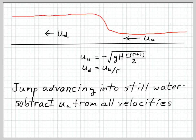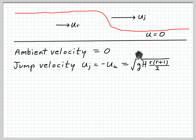If we imagine that our jump is advancing into still water, then all we have to do to make the required Galilean transform is subtract the upstream velocity from the entire flow. That requires adding root GH r times r plus 1 over 2 to all velocities. The result is that the upstream velocity becomes 0. We have the case of a hydraulic jump advancing into still water, and now there's a couple of velocities we can figure out: the speed of the jump itself, Uj, and the speed of the run-up behind the jump, Ur.